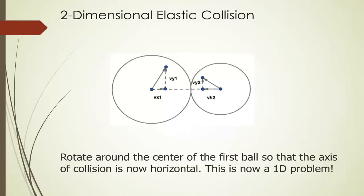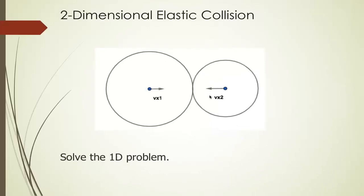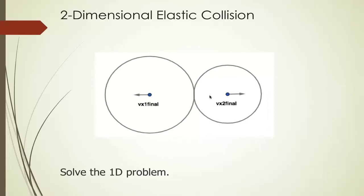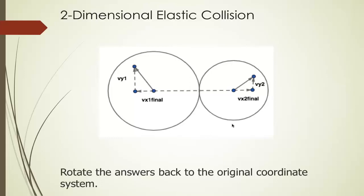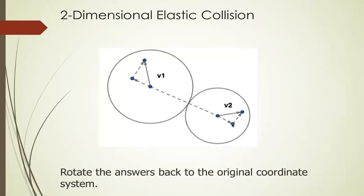Now that we have a one-dimensional problem, we solve it to get the final velocity, then use that to get the final velocity in two dimensions. Once we resolve it and get v1 final and v2 final in 1D, notice that the vertical component is not affected by the collision — it stays the same for both balls. We resolve the one-dimensional version, keep the vertical component the same, and then rotate the answer back to the original coordinate system to find the final velocity.